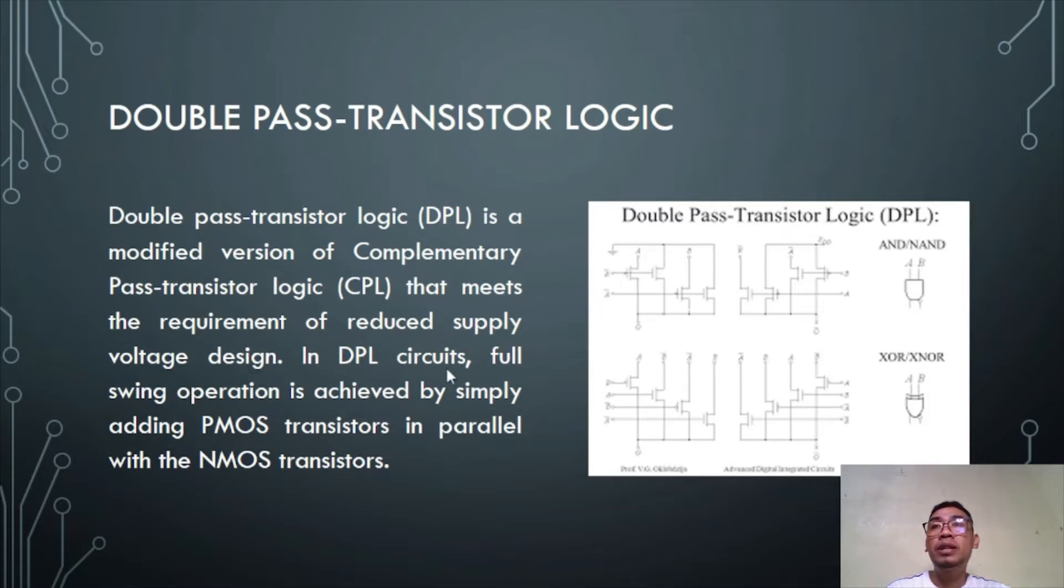In DPL circuits, full swing operation is achieved by simply adding PMOS transistors in parallel with the NMOS transistor. These are the circuits for the DPL logic: AND gates, NAND gates, XOR, and XNOR.